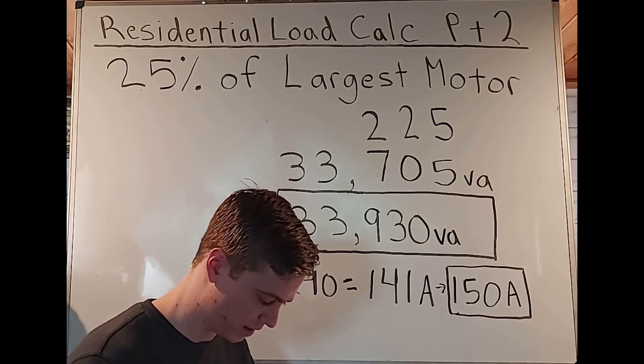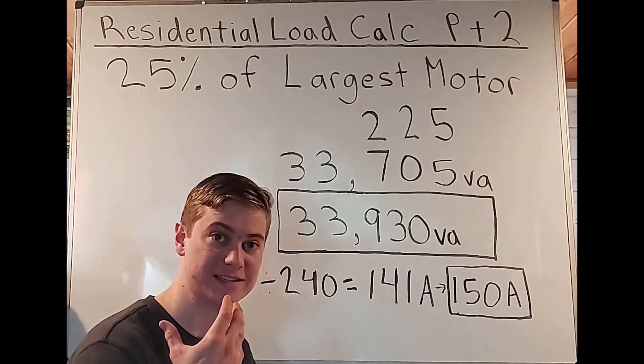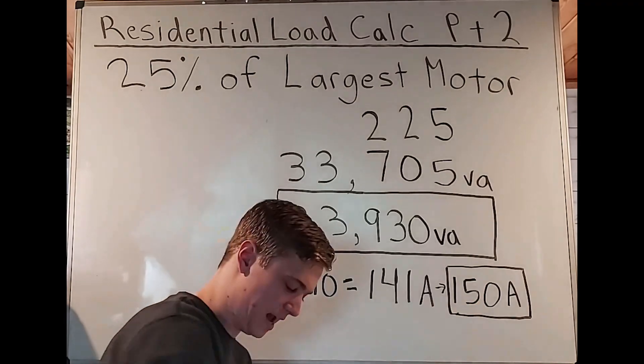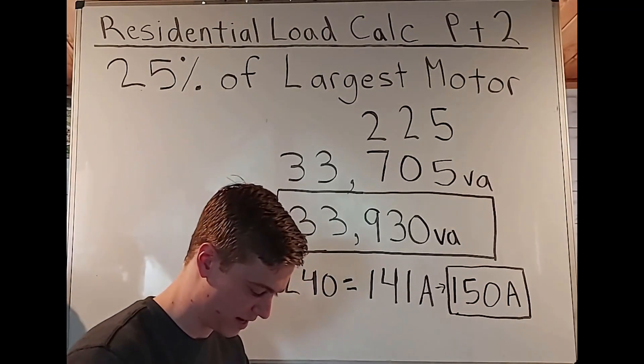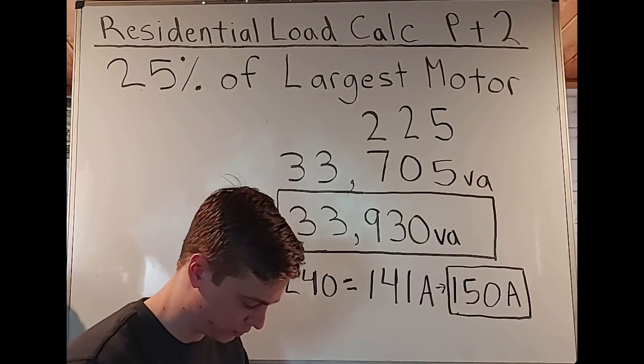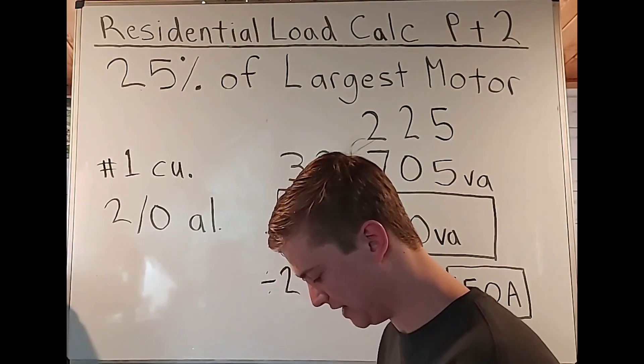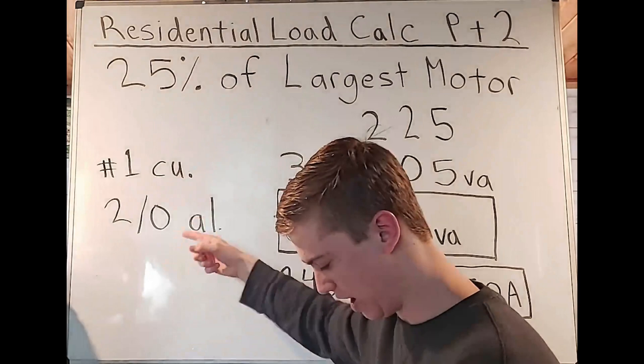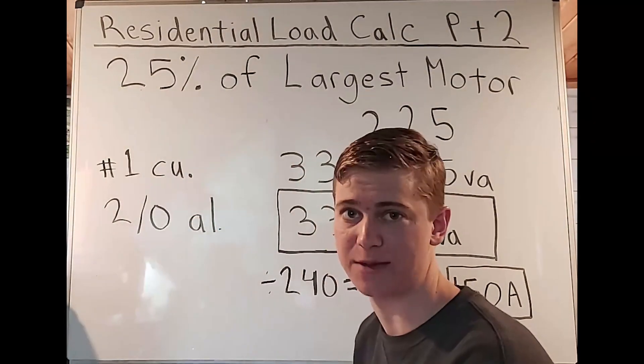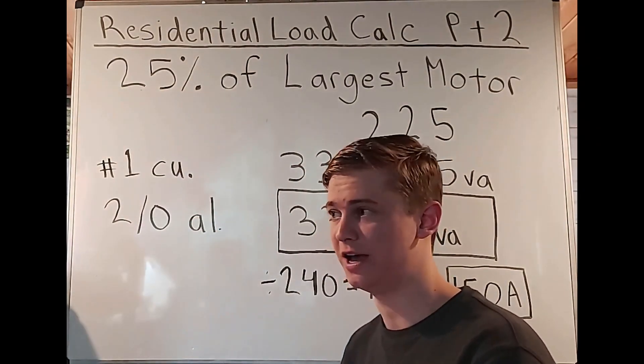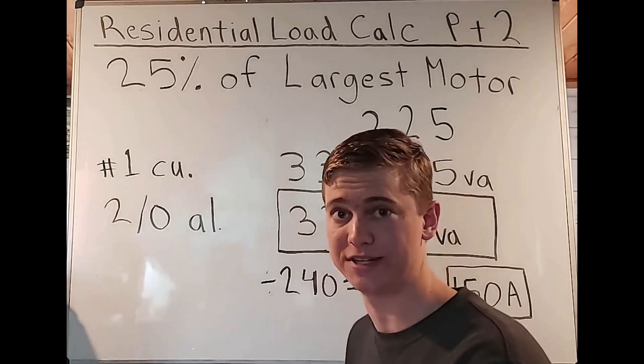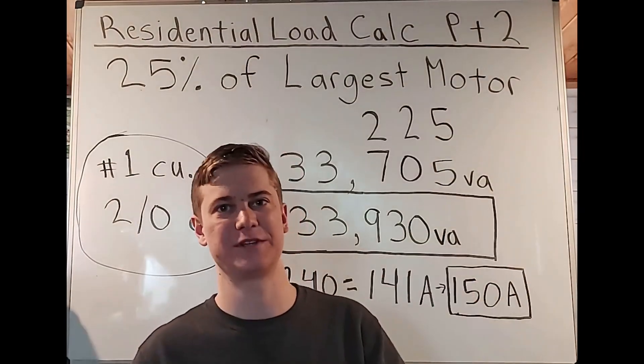So most of the time you're just going to be using table 310.12. We see it says single phase dwelling services and feeders. It goes all the way from 100 amps to 400 amps, because of course that is the limit for this table. We had a 150 amp breaker. That was the standard size. And of course we see that here in table 310.12. Now 150 amps is going to give us number one copper or two ought aluminum. And you can see that here in this table, you could also look it up on Google and you'll see, that's why you get that answer. That is not from table 310.16.